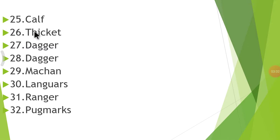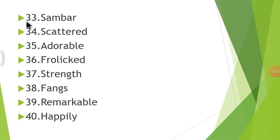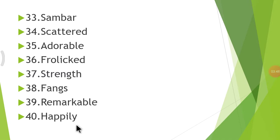Number 25: Calf. Number 26: Thicket. Number 27: Dagger. Number 28: Same. Number 29: Makan. Number 30: Langoors. Number 31: Ranger. Number 32: Pugmarks. Number 33: Sambal. Number 34: Scattered. Number 35: Adorable. Number 36: Frolicked. Number 37: Strength. Number 38: Fangs. Number 39: Remarkable. Number 40: Happily. So there are 40 hard words in total.